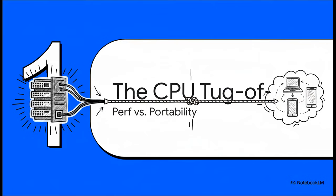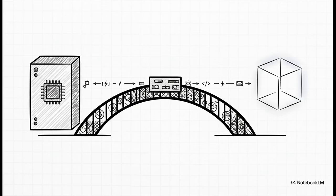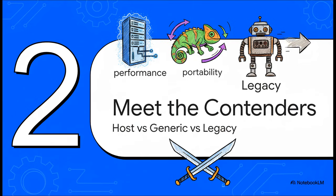So what's the decision all about? It all boils down to this fundamental tug of war — a constant battle between two things you really want: raw, unfiltered performance on one side, and the incredible flexibility of portability on the other. The tricky part is you can't always have both. Your choice right here determines which one wins. At its core, the CPU type setting is kind of like a translator. It dictates exactly which features and instructions from your physical, real-life CPU are going to be shown to the virtual machine — the bridge between the actual silicon in your server and the software running inside your VM. Proxmox gives us three main families of options: the host model, the generic types, and the legacy family.